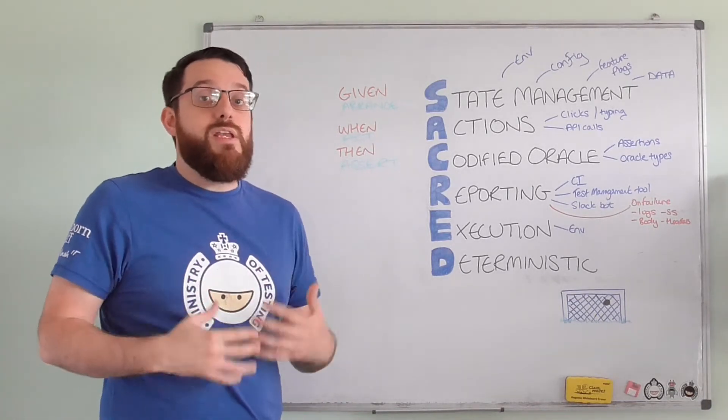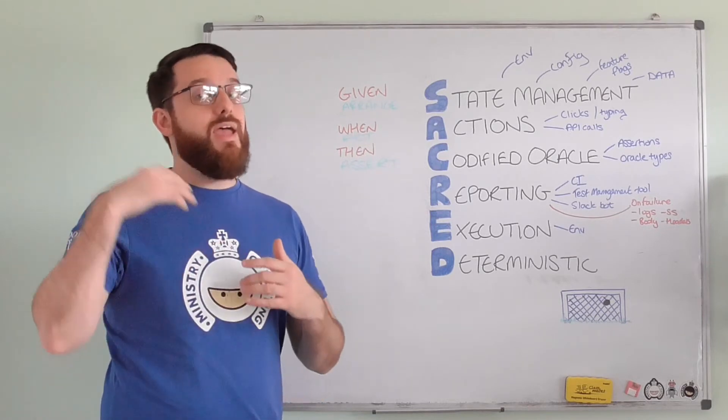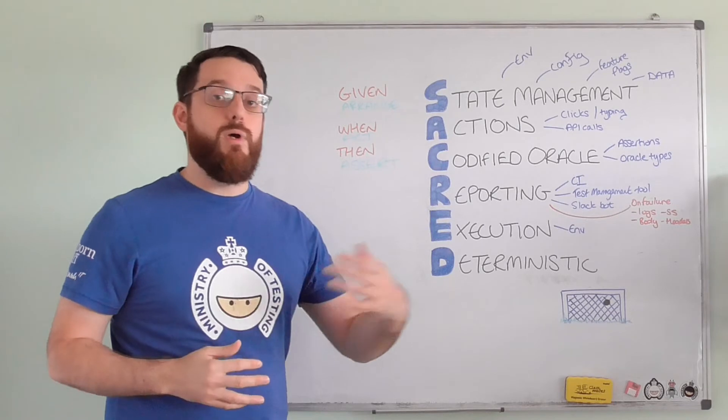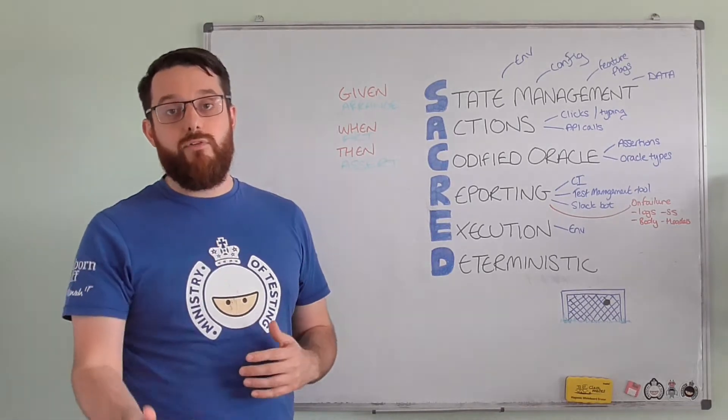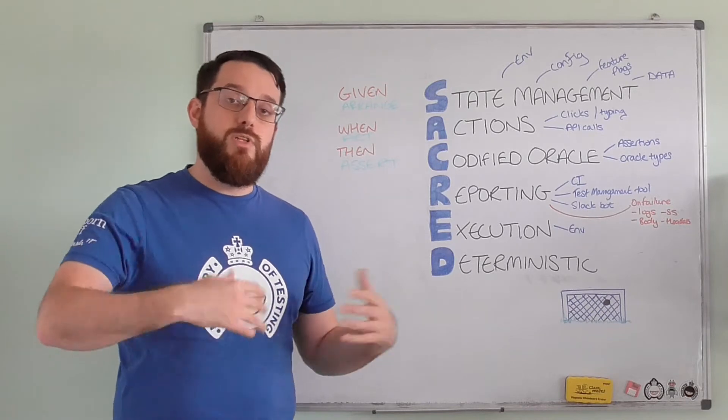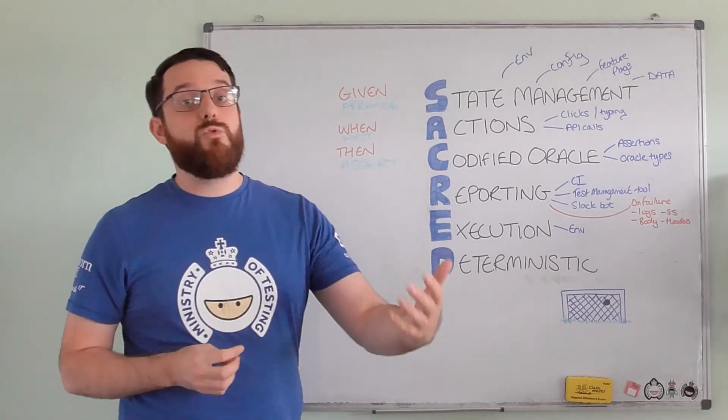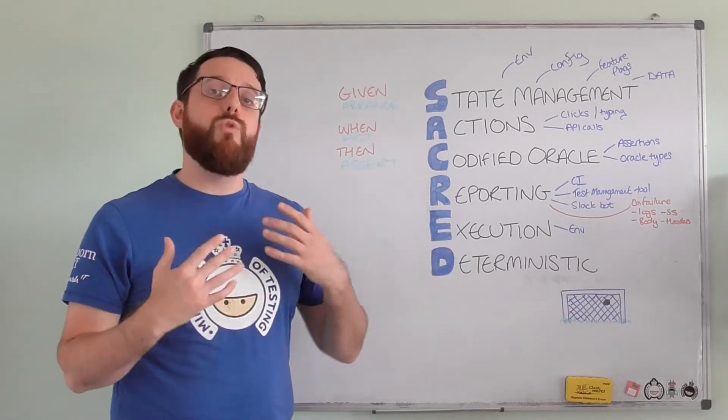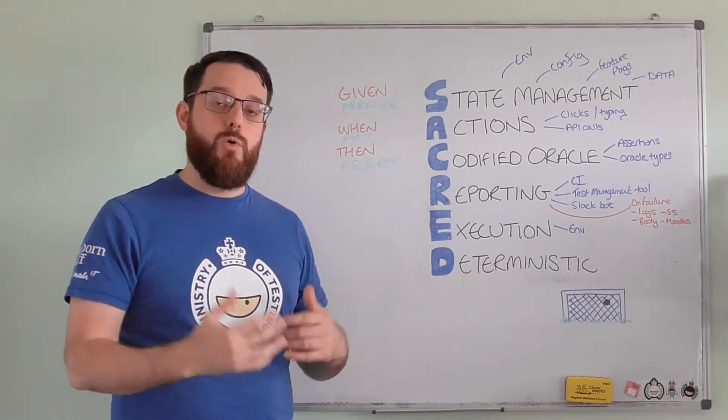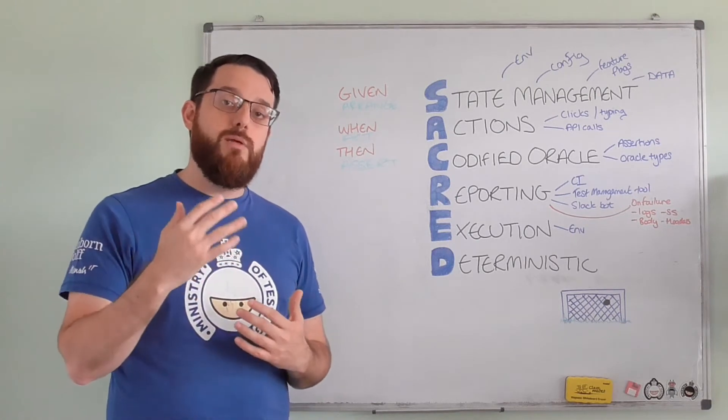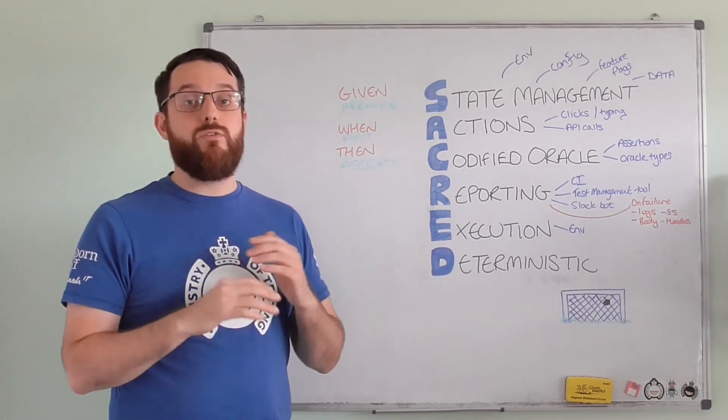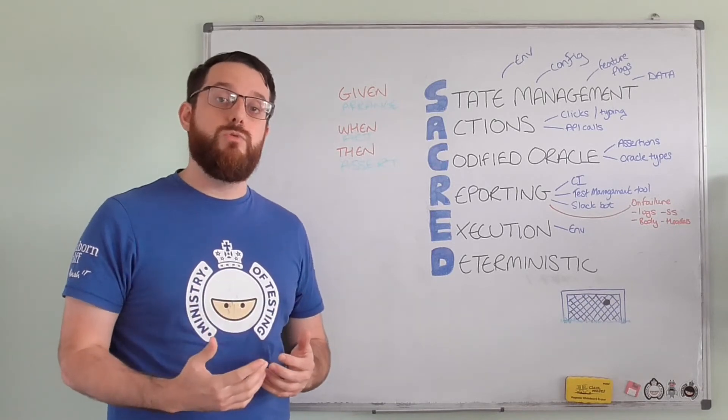As skilled testers or anyone doing any testing, their head's full of oracles. We have them all the time. You have a conversation in the hallway, it will update your oracles. You have a grooming session, a Three Amigos session, you read some documentation, you look at someone else's website—you're getting them all the time. But when we put them inside an automated check, we codify them. We lock them in place.